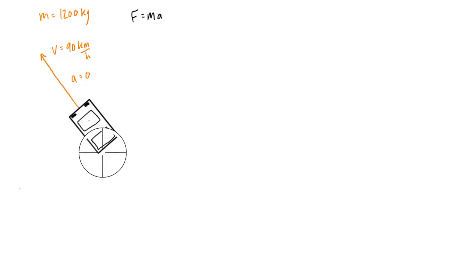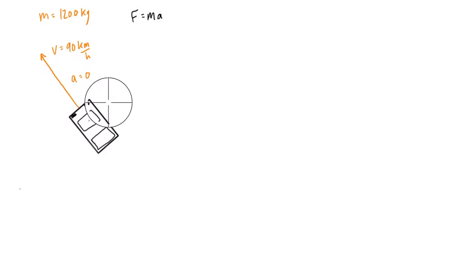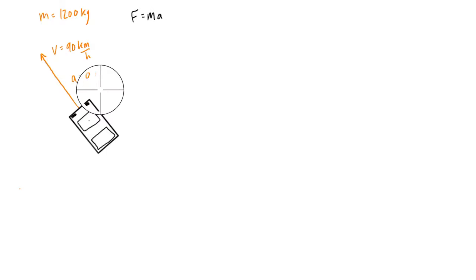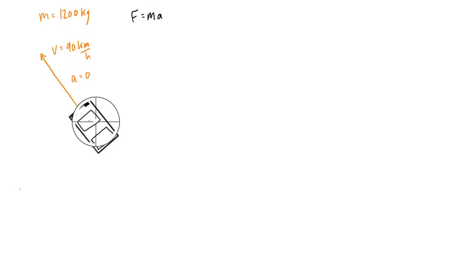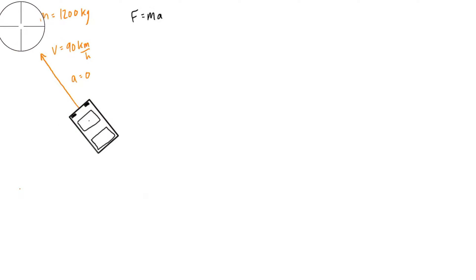If you remember back to statics, when you talk about static equilibrium, as long as the system is not accelerating then it's in static equilibrium. So it can have a velocity that's not zero, but as long as acceleration is zero it's just in equilibrium. This car is not accelerating in any particular direction — it's just going to continue along its path at constant velocity.